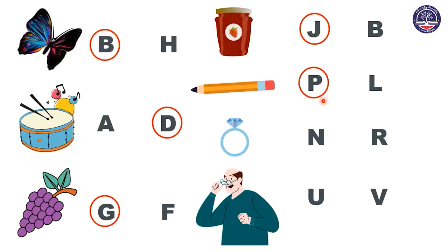Great job, everyone. Now let's move on to the next picture. What is this? You wear it on your finger. This is called a ring. Yes. R, R, ring. Let's say it again: R, R, ring. Does ring start with letter N or R? R, R, ring starts with letter R. So we are going to circle letter R.